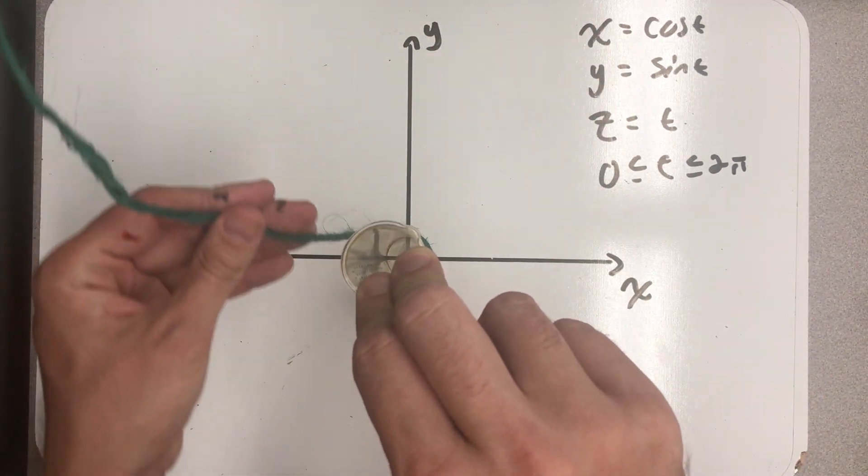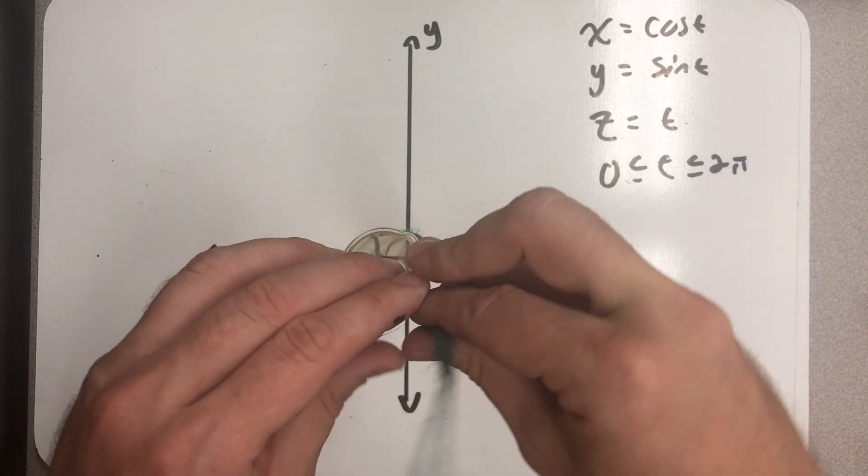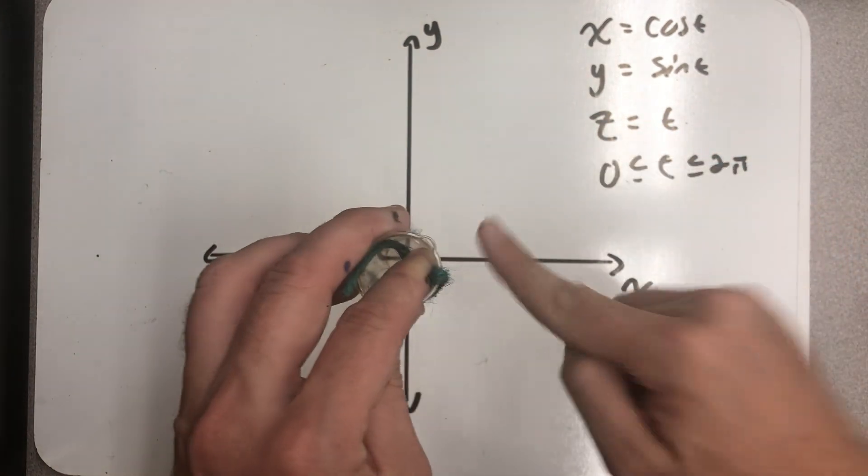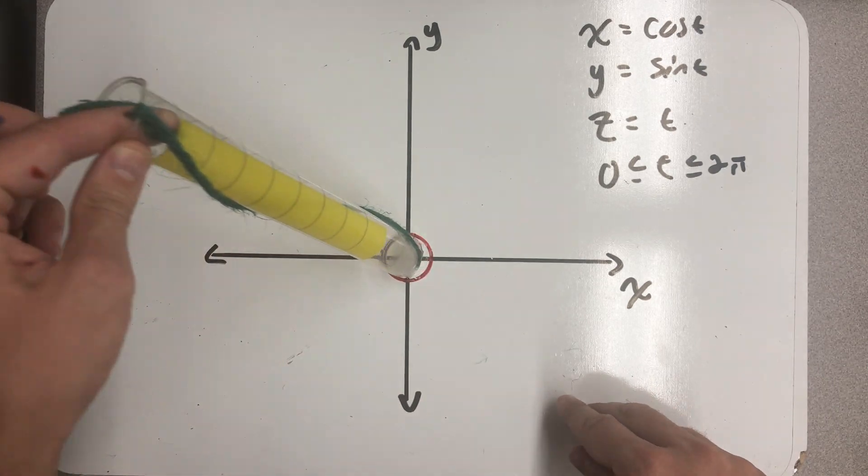I get halfway around, and I should be π units above the plane. And then I get the whole way around, and I'm 2π units above the plane, right above my initial point, because I should have come full circle on the unit, around that unit circle.